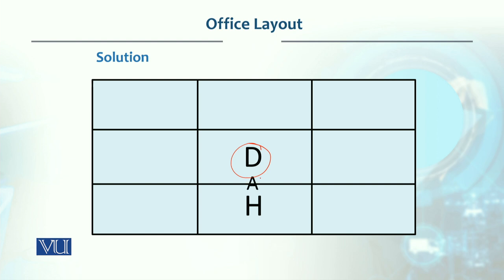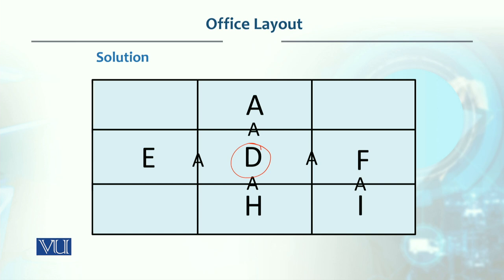The four absolutely necessary offices can be placed around the Secretary. H is placed with A — between D and H — and their relationship is absolutely necessary. D and E is also absolutely necessary, as seen in the relationship chart. D and A is absolutely necessary because A is the Chief Executive's office, so it should be immediately next to the Secretary. Similarly, D and F is also absolutely necessary.